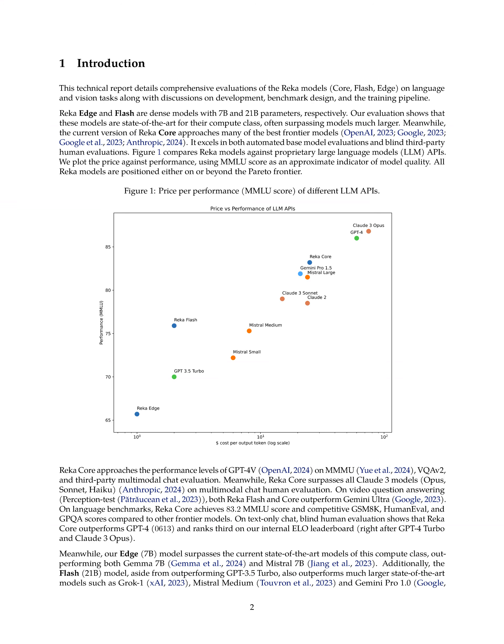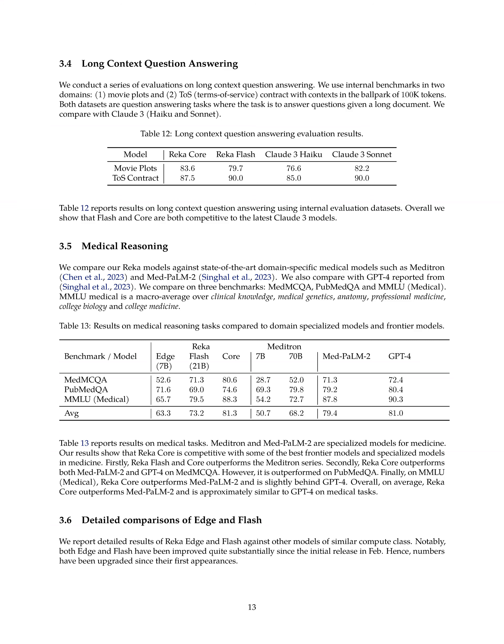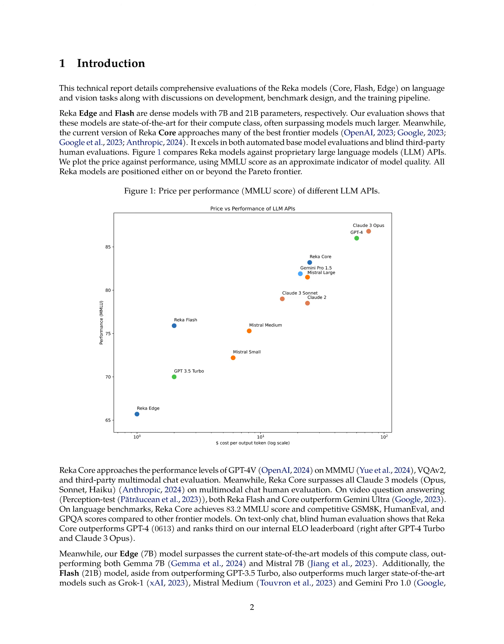For example, RECA Core approaches the performance levels of GPT-4V on various benchmarks and surpasses models like Claude III Opus and Sonnet on multimodal chat human evaluation. RECA Flash and Edge also excel, with Flash outperforming models like GPT-3.5-Turbo and Mistral Medium, and Edge surpassing Gemma 7b and Mistral 7b. These results showcase the efficiency and effectiveness of RECA models in achieving competitive performance with fewer parameters, making them more computationally efficient and cost-effective.